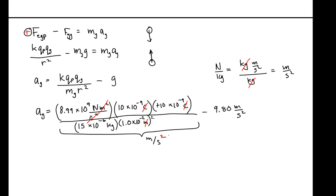Plugging these numbers into the calculator, we get an acceleration of approximately 600 meters per second squared — to one significant figure. That is roughly 60 times the acceleration due to gravity. So that glass bead is not only going to leap — it's going to rocket its way off the table.